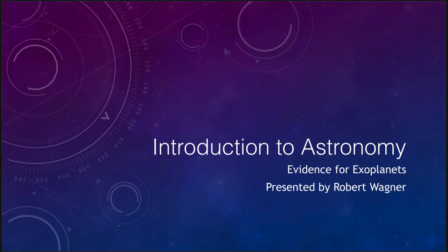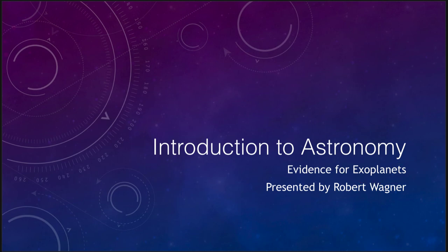Greetings and welcome to the introduction to astronomy. In this lecture, we are going to talk about evidence for exoplanets. So when stars are forming, planets are likely forming around them. What is the evidence that we have that other planets and planetary systems exist out in the universe? Let's take a look at some of the earliest things that we could see.